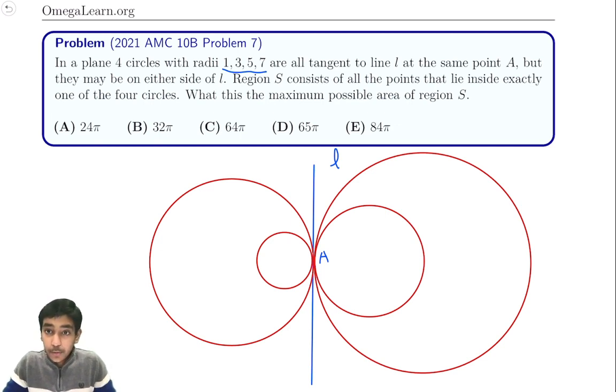So basically you want to find the area of the region covered by all of the points that lie in exactly one of the circles. So basically this area here is not good because it lies in the small circle and the bigger circle there. So it has to lie in exactly one circle.